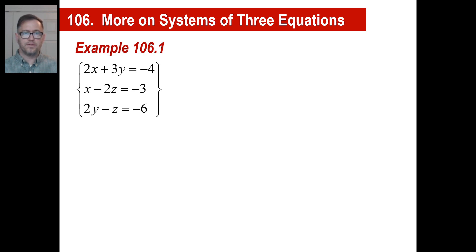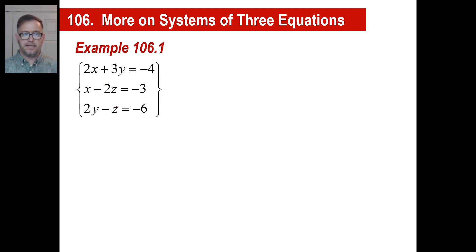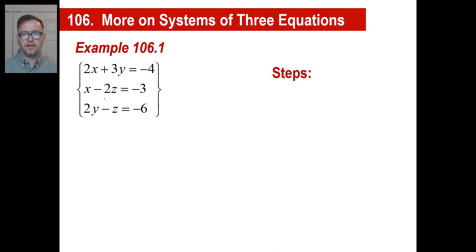Hey y'all! Let's take a look at more on systems of three equations. We've done these before, but they've all had an x, y, and z in each equation. Look at these — they only have two of the three: x and y, x and z, or y and z. How are we going to solve this? I've got a method, so copy this down.